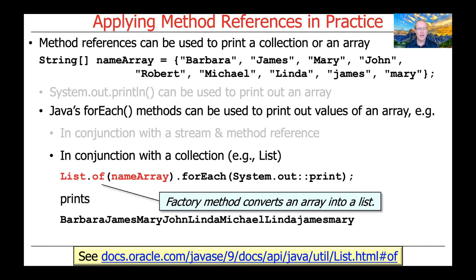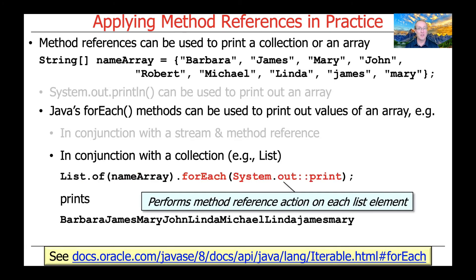You could also do something very similar in conjunction with a collection — in this case, a list. We could say List.of(nameArray), similar to what we'd done earlier in the println example. But then we use the forEach method defined on List — actually defined on Iterable — and pass the System.out::print method reference in order to print the contents. You can see the results on the slide.